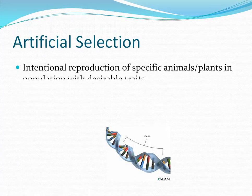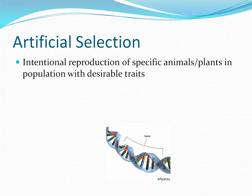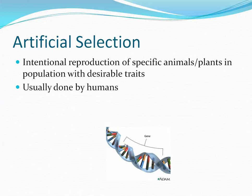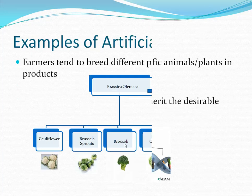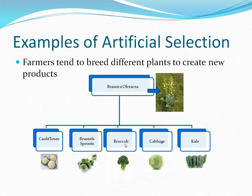First off, artificial selection is when someone intentionally chooses to breed either plants or animals together to get what they want in the offspring — like a special trait or something. Some examples would be how farmers use a plant and make different ones to produce different products.